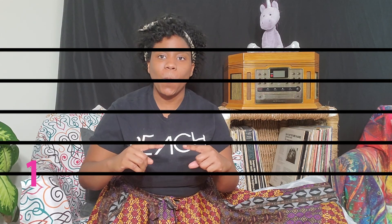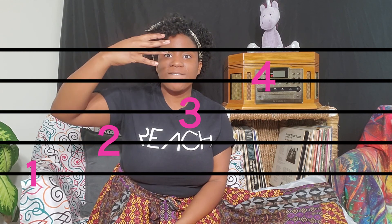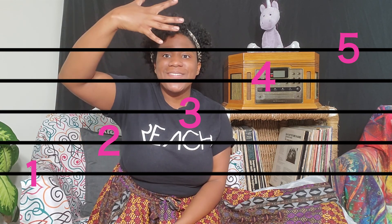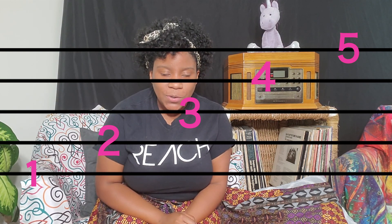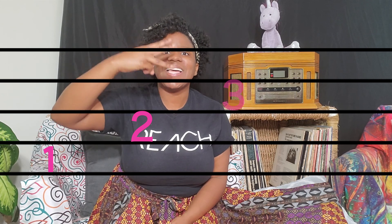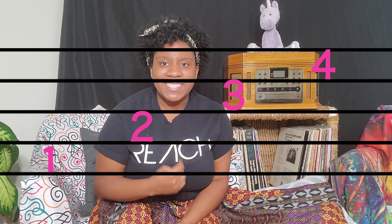The staff has five lines. Let's count them now: one, two, three, four, five — five lines total. The staff also has four spaces. Can we count them? One, two, three, four — four spaces.